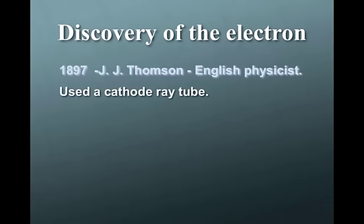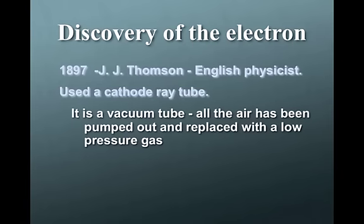He used a cathode ray tube. Some of you may be familiar with a cathode ray tube. In like an old TV, they used to have tubes that produced the light so that we could see. And what it is, is it's an evacuated tube that you can pass a current through. It's a vacuum tube. All the air's been pumped out and replaced with a low pressure gas.